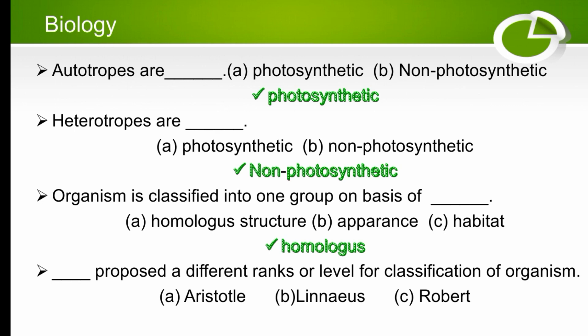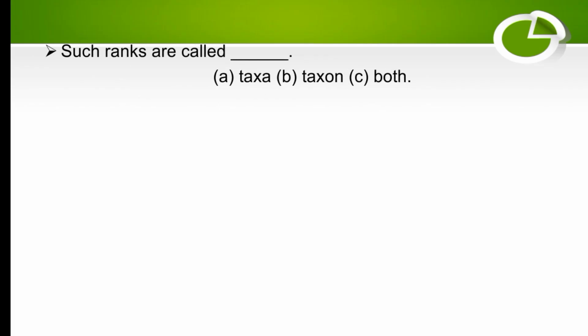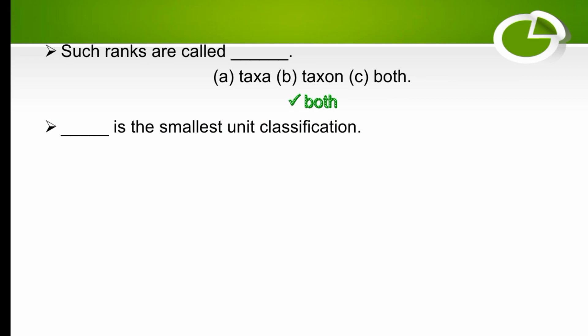The next MCQ: dash proposed different ranks or levels for classification of organisms — Aristotle, Linnaeus, or Robert? The right option is Linnaeus. Linnaeus proposed different ranks and levels for classification of organisms. Such ranks are called taxa or taxon — the right option is both.